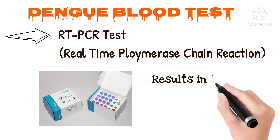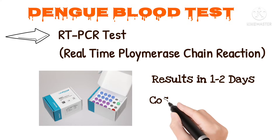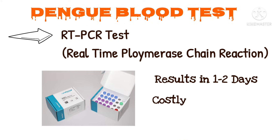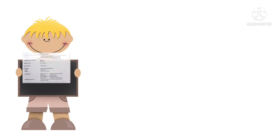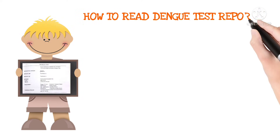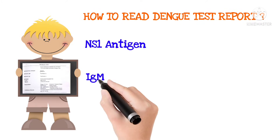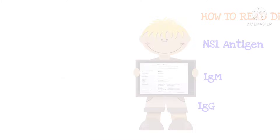With RT-PCR, results also come in one to two days, but it is quite costly. When we see a dengue test report, we come across three basic terms: NS1, IgG, and IgM.